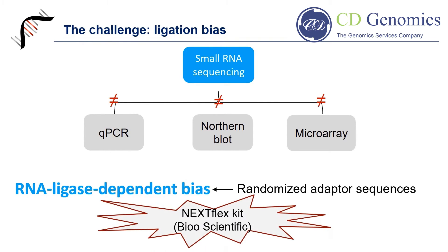BioScientific's NextFlex Small RNA Seq Kit is an excellent kit that reduces ligation-associated bias. This kit utilizes adapters with 4NT random ends, which provides a more even coverage of individual small RNA species. A work by Baron Gay et al. has suggested that the NextFlex protocol is the least biased kit for small RNA sequencing.